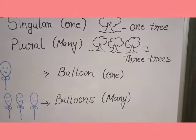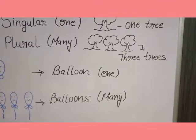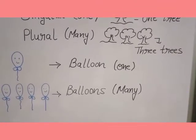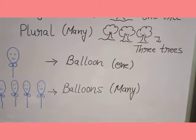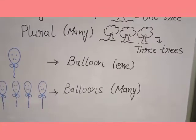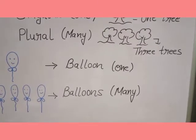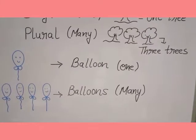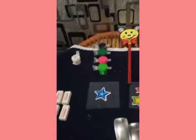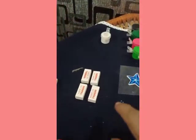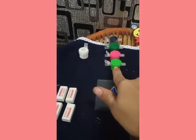The spelling of tree: T-R-double-E. Trees: T-R-double-E-S. Next, balloon: B-A-double-L-double-O-N — this is singular. Balloons: B-A-double-L-double-O-N-S — this is plural. One balloon and these are four balloons. There are many examples.